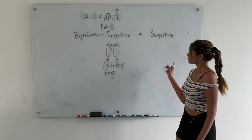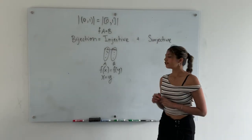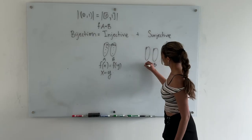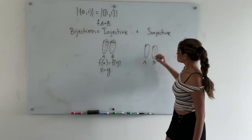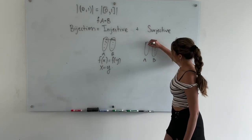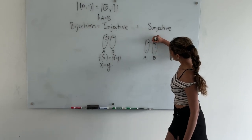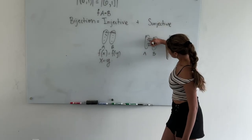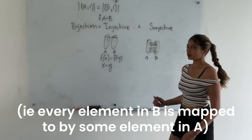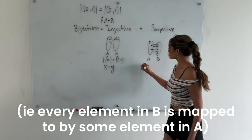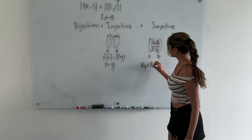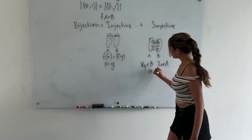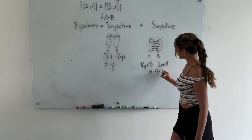Now let's define what a surjection is. f is a surjection if every element in B is hit by f. So for every element in B, there is some value which maps to it. In words, we write this as: for all y in B, there exists some x in A such that f(x) equals y.